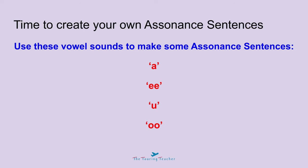Now you've had some practice with spotting vowel sounds. I want you to use these vowel sounds to come up with some sentences of assonance to make your writing more interesting. This is a run-through, a bit of practice before you start using them in your own writing. These are the vowel sounds I want you to use: A, E, U and O.